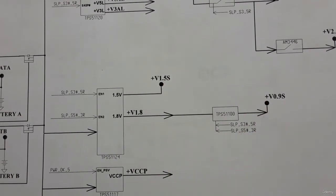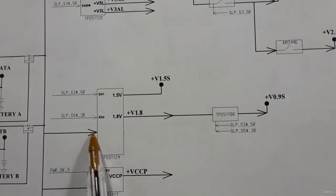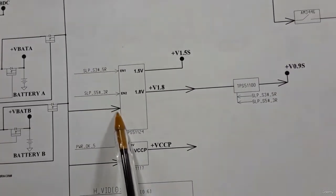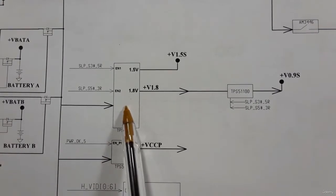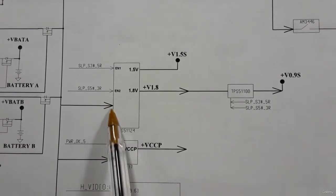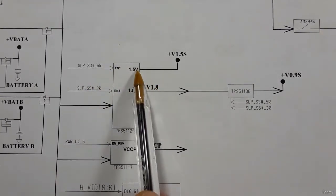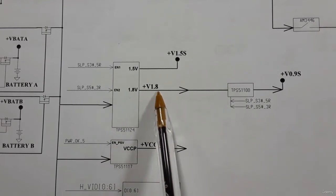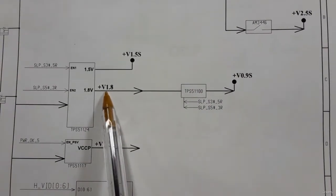This next circuit generates 1.5 V, 0.9 V, and 1.8 V. V_bat at 19 volts is applied to this IC as its working power. When this IC is powered and receives enable signals, it will generate 1.5 volts for the chipset and 1.8 volts for RAM.